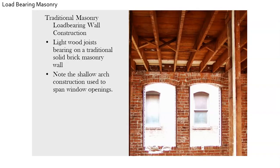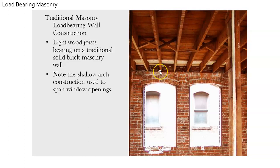Here we have a look at a traditional masonry wall from the inside. We can see the floor joists above resting on a shelf or ledge that was created here. Then we see the nice shallow arches used to span the windows.